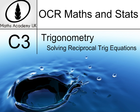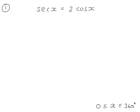Trigonometry, solving reciprocal trig equations. Secant x is equal to 2 cos x. We're working out the values of x in this range here.